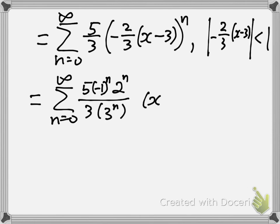And what's left is x minus 3 to the n here, and that thing becomes absolute value of x minus 3 less than 3 over 2.